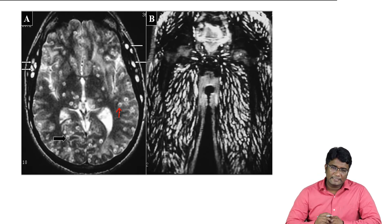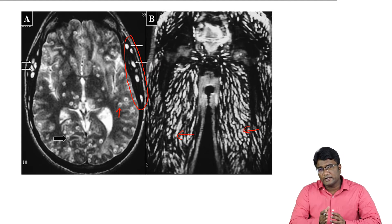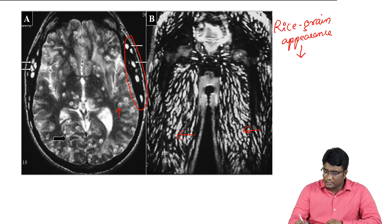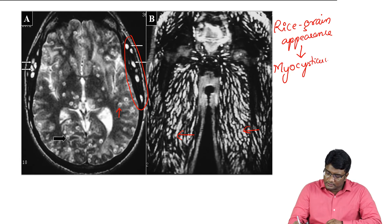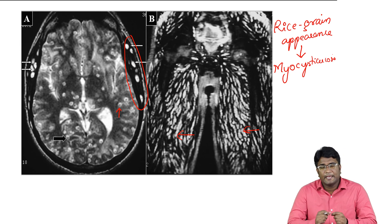This parasite is also seen in the scalp muscles and even the lower limb muscles. These parasites align longitudinally along the muscle planes, giving a classic rice grain-like appearance when involving muscles. This is called myocysticercosis. Myocysticercosis shows this rice grain-like appearance, and later the parasites get calcified, giving rice grain calcifications.